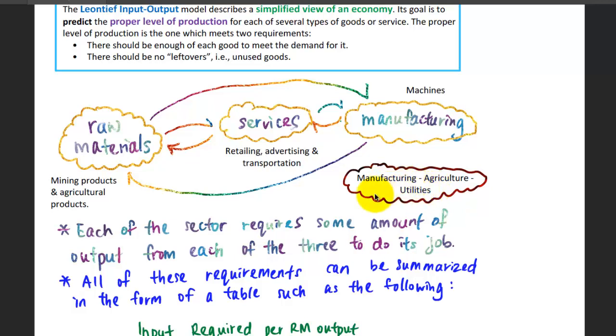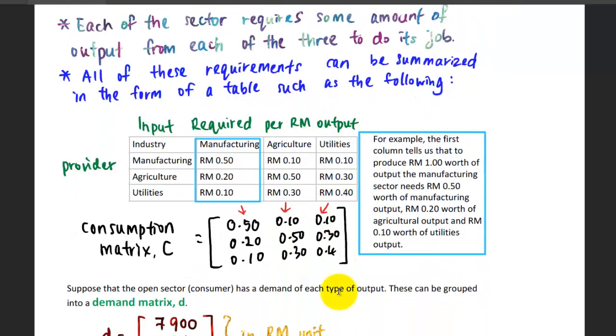This shows that even though the economy can be simplified into three major sectors for this particular industry, each of these sectors depends on each other. Each of the sectors requires some amount of output from each of the three to do its job. All of these requirements can be summarized in the form of a table.